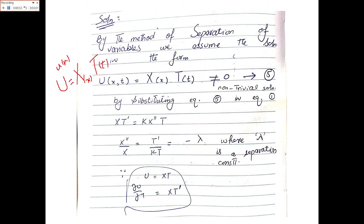Our given equation is u_t = k·u_xx. Applying the separation u = X(x)·T(t), the left side becomes X·T' and the right side becomes k·X''·T, where X'' is the second derivative of X with respect to x and T' is the first derivative of T with respect to time.